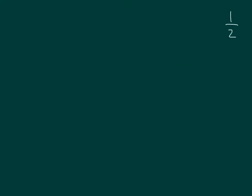Let's first look at a number line, and we're going to take a look at 1 half. 1 half is a fraction, and it is between two whole numbers — it is in between 0 and 1. We would divide this into two equal parts in between those whole numbers, 0 and 1, so that we have this here as 1 half.